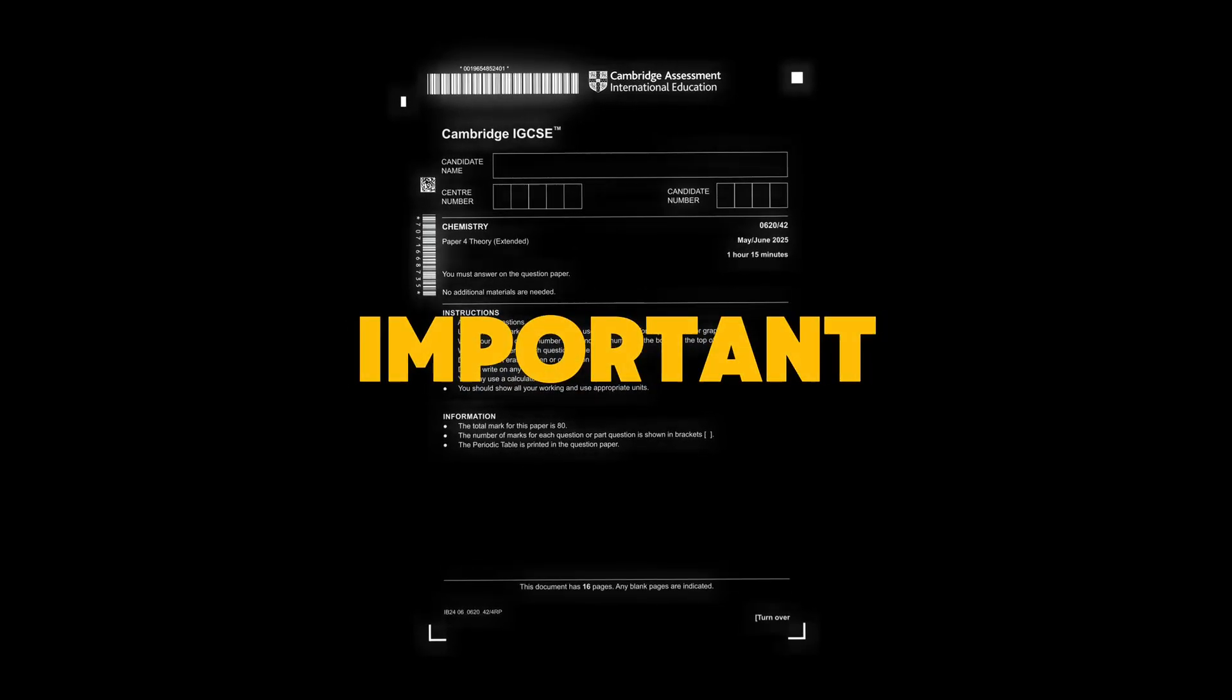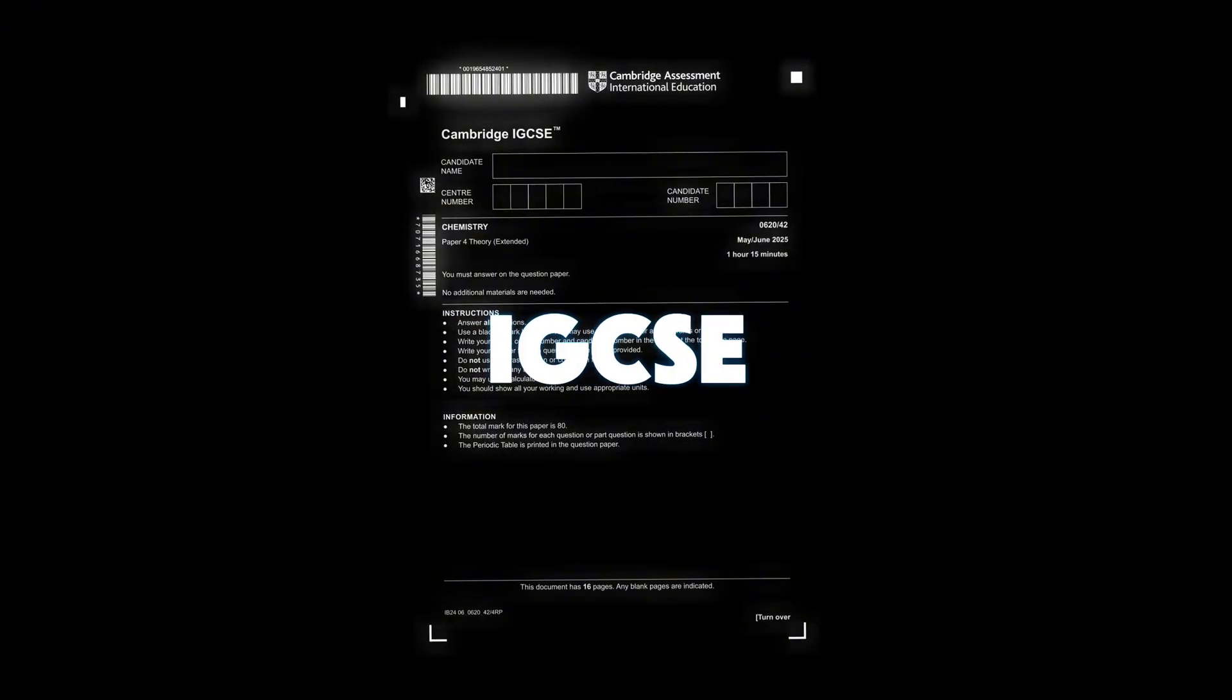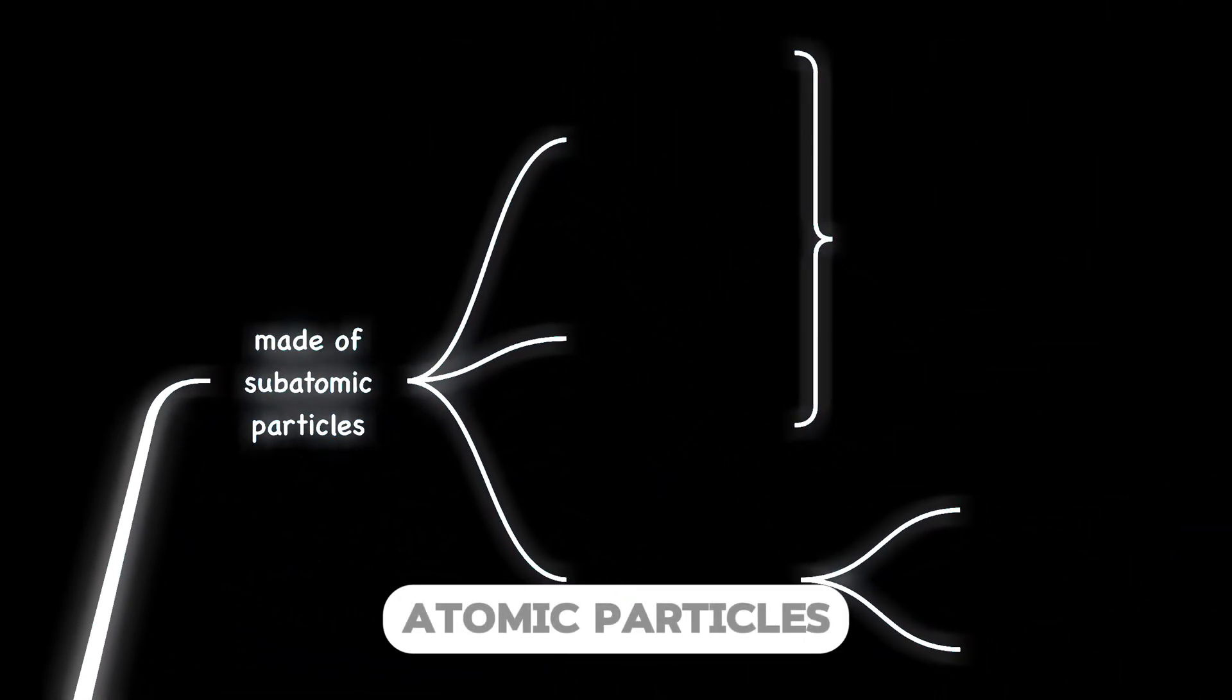This is a summary for all the important concepts from the first part of IGCSE chemistry. Let's start with the concept of atoms. Atoms are made of three subatomic particles.